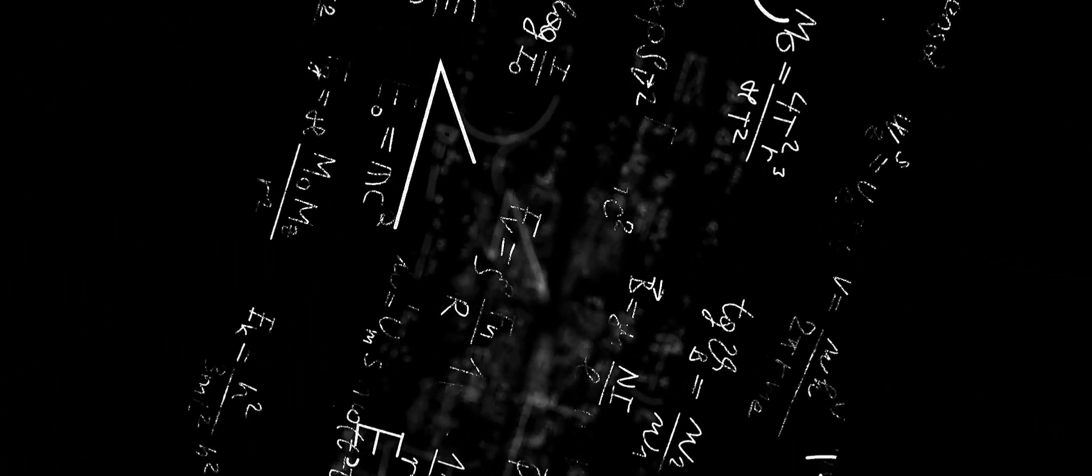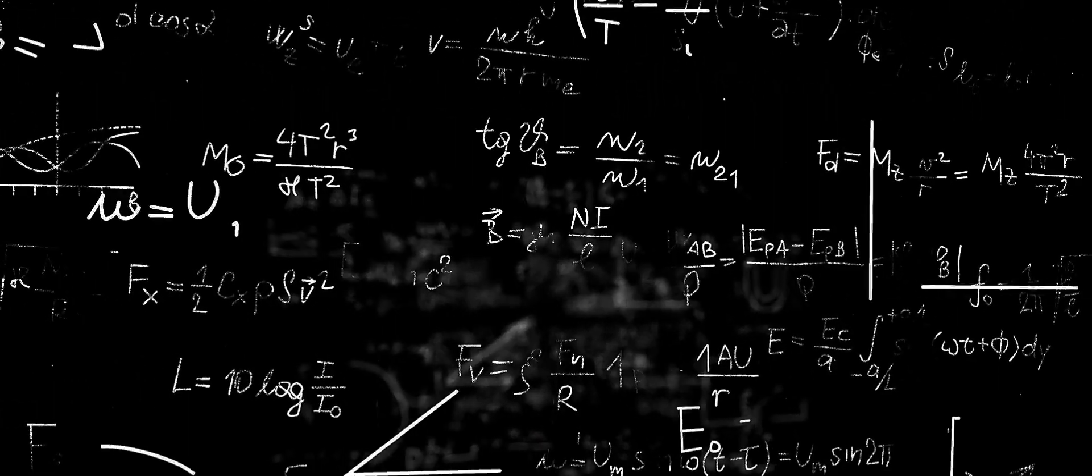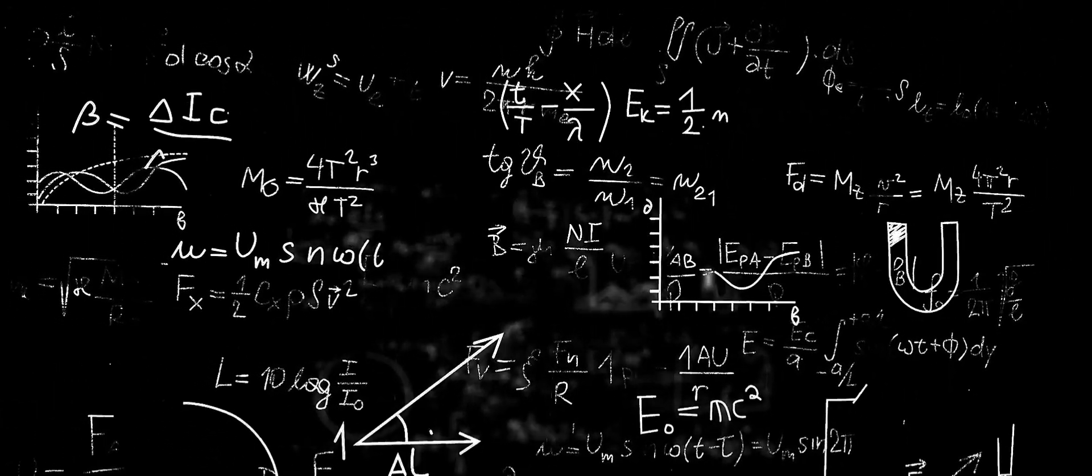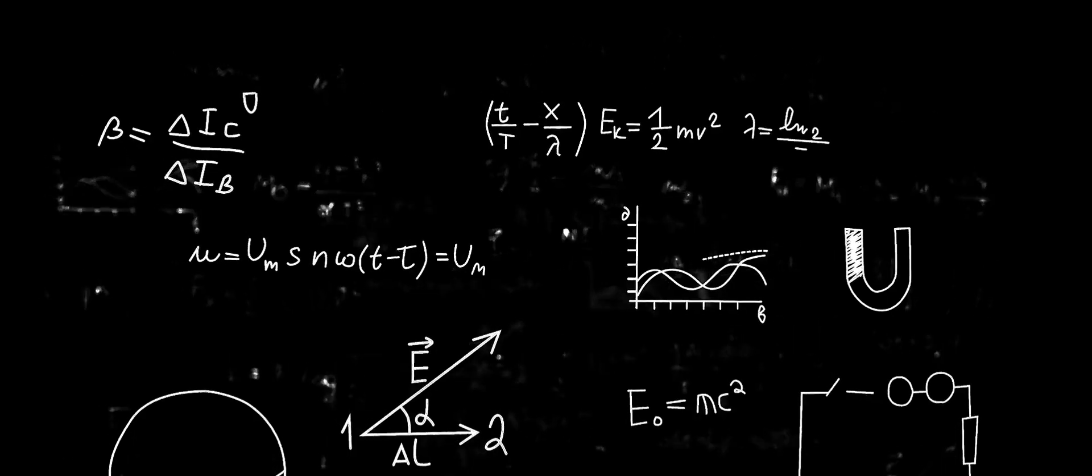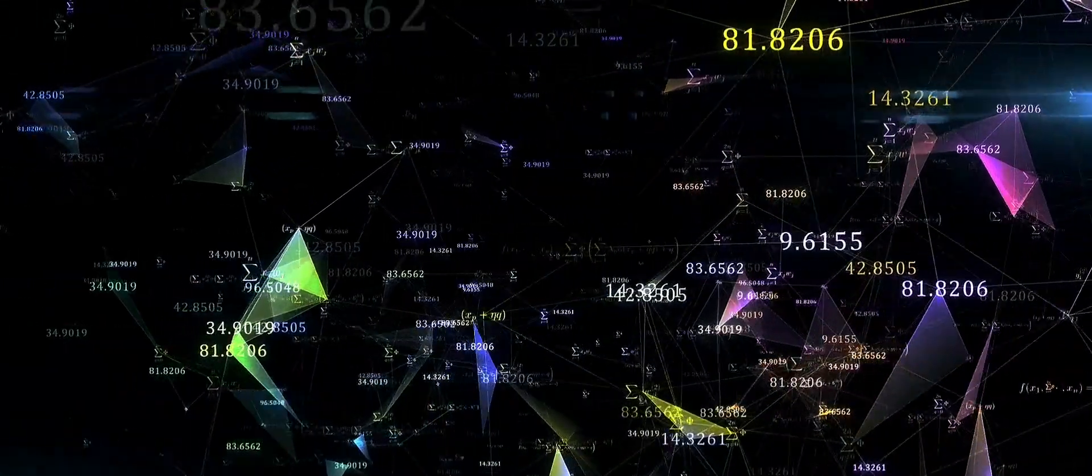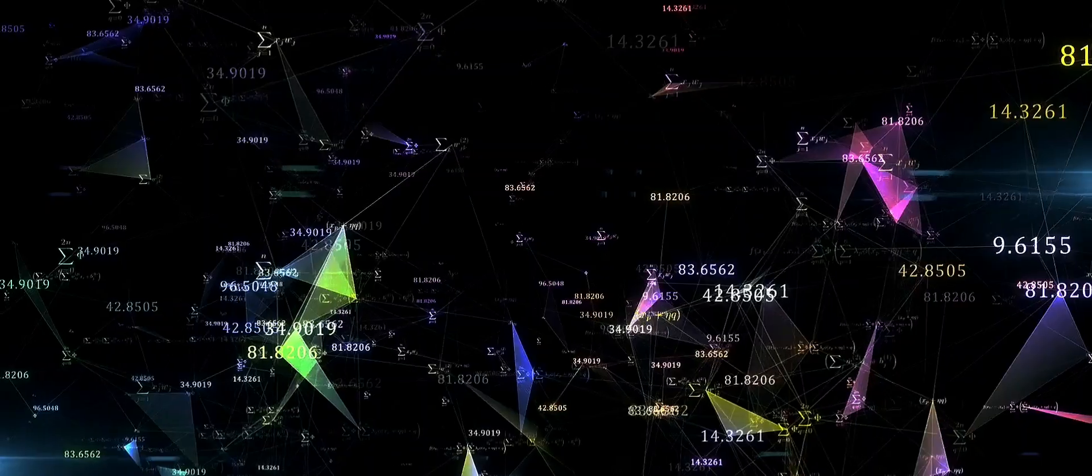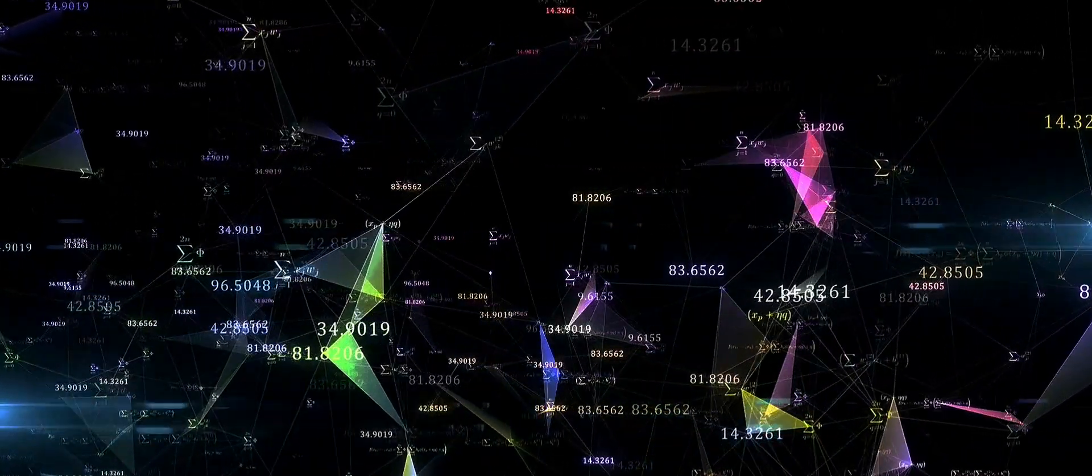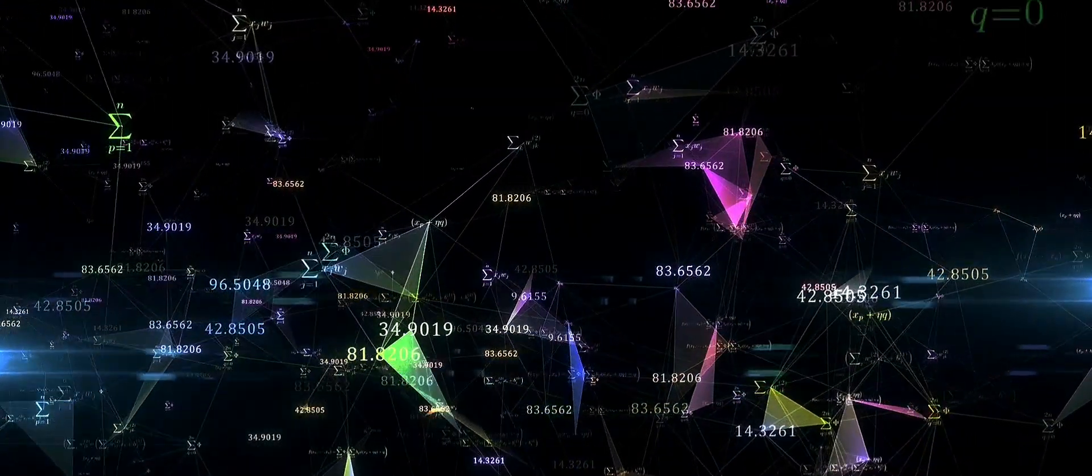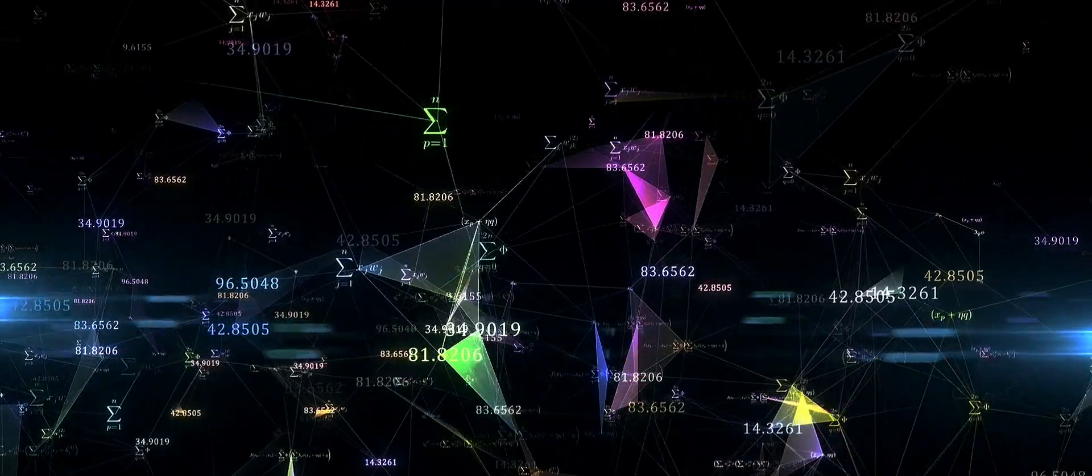Next, we arrive at level three, the many worlds interpretation of quantum mechanics. This is where things get really mind-boggling. Here, every quantum possibility is realized. Every choice, every chance, every random quantum event spawns a new universe. Did you ever wonder what would happen if you had chosen differently? In a level three universe, there's a version of you who did.